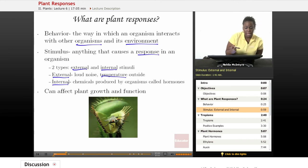An internal stimuli example would be chemicals that are produced within that organism, and those chemicals affect some change in that organism. Chemicals produced by organisms such as plants that affect a change are called hormones, and we'll talk about plant hormones in this lesson. Plant responses can affect how plants grow and how they function.